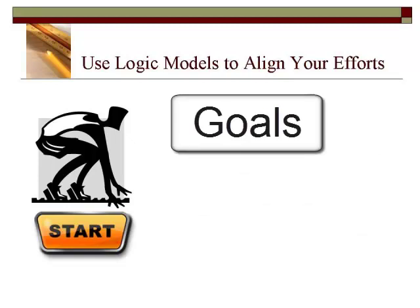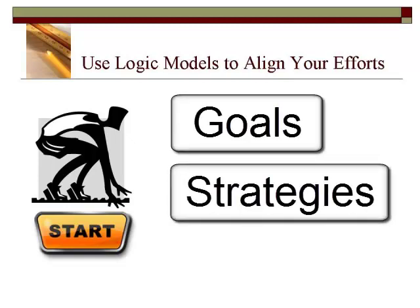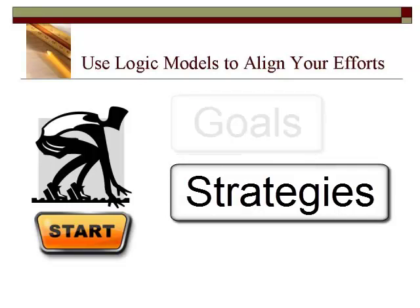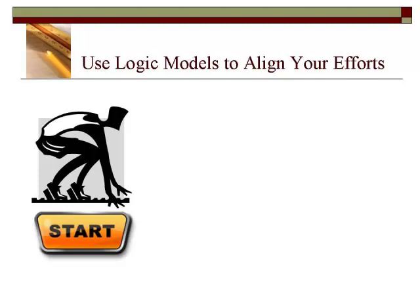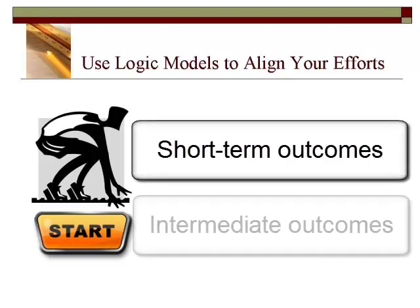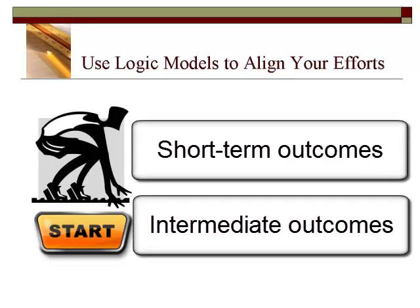The next steps are to consider the long-term goals for addressing the need and determine the strategies you think can accomplish these long-term goals. You will then want to determine the resources it will take to implement the strategy, whether they are available or whether they could be secured. Finally, lay out the short-term and intermediate outcomes that can help you monitor the success of your efforts. You can write them generally at first. Eventually, you will want a specific timeline for accomplishment and a SMART goal of what you will measure.